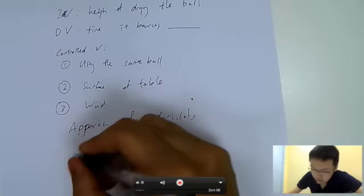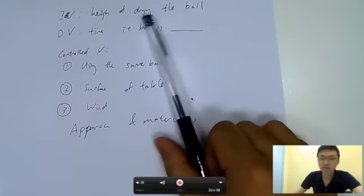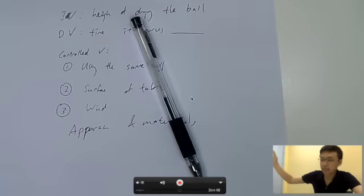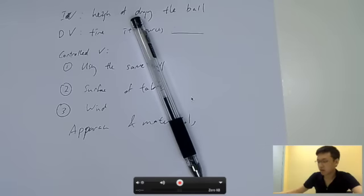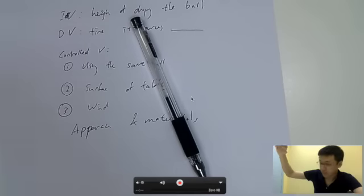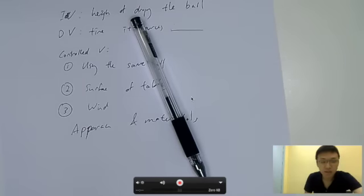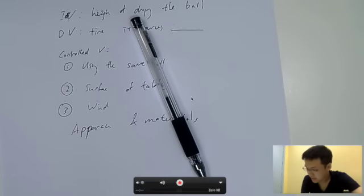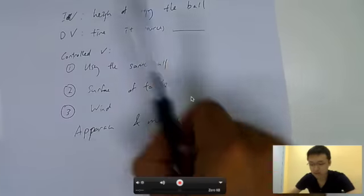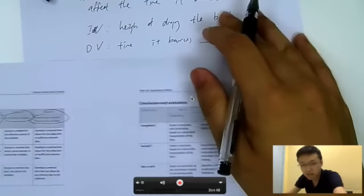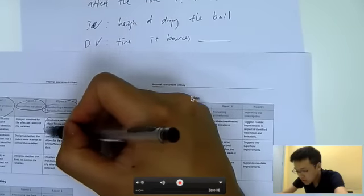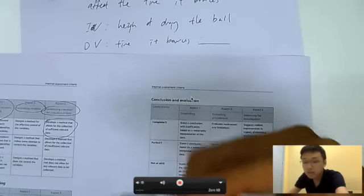The next step is the method. Use the measuring stick to measure a height of approximately 10 centimeters from the table. Place the ball beside the measuring stick to confirm it's 10 centimeters from the table, drop the ball, and start the timer once the ball is dropped. Click stop on the timer when the ball stops bouncing. What's most important here is that you develop a method that allows for the collection of sufficient data.